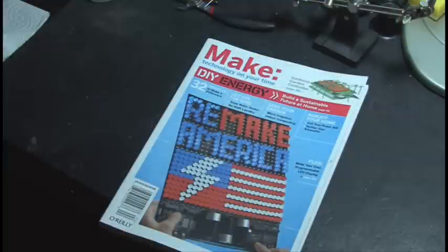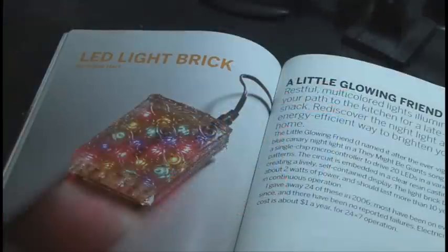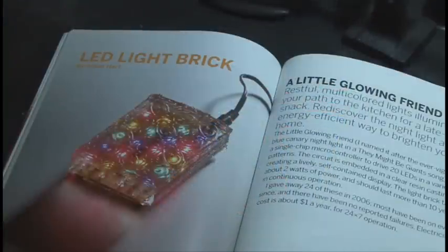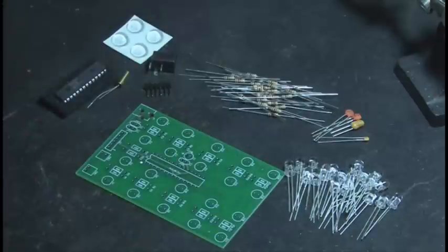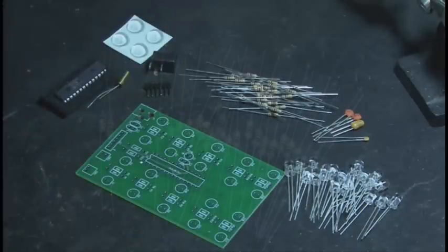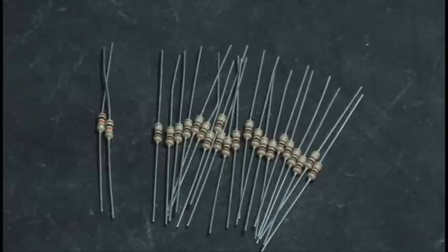Make Volume 18 is where you'll find the LED light brick project by Alden Hart. You'll find everything you need to build the brick in the kit. This is an easy project for beginners, and advanced users can take it a step further. It's pretty much all soldering, so let's get to work with the 20, 100 ohm resistors that we need to put in place.